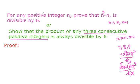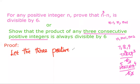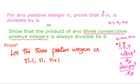I will prove the first statement by taking three positive integers. Let the three consecutive positive integers be n minus 1, n, and n plus 1. So if we take 8 as n, this becomes 7 as n minus 1 and 9 as n plus 1. The product of these three numbers is (n minus 1) times n times (n plus 1).